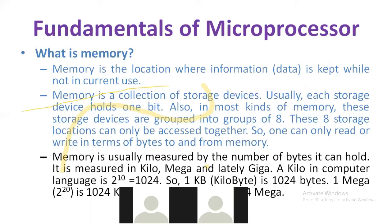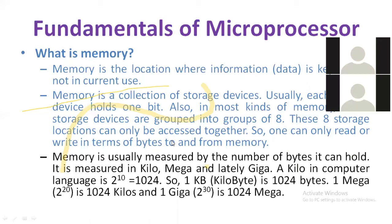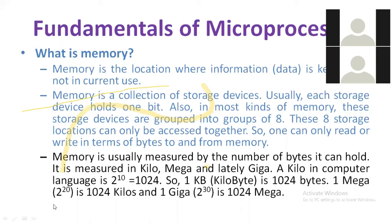Memory is usually measured by the number of bytes it can hold, in kilo, mega, and giga. In computer language, kilo is 2 raised to 10, which equals 1024, so 1 KB equals 1024 bytes. To understand kilo, mega, and giga better, let me switch to an Excel file to demonstrate.